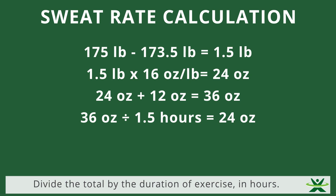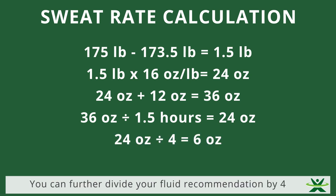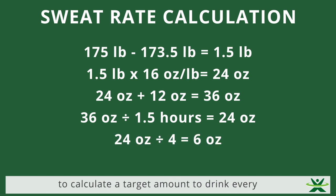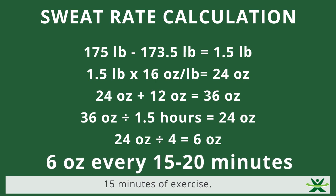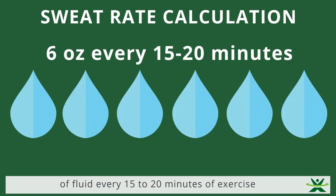Divide the total by the duration of exercise in hours. This number represents the amount of fluid you should consume per hour of exercise. You can further divide your fluid recommendation by four to calculate a target amount to drink every 15 minutes of exercise. An easy estimation is one gulp equals one ounce.